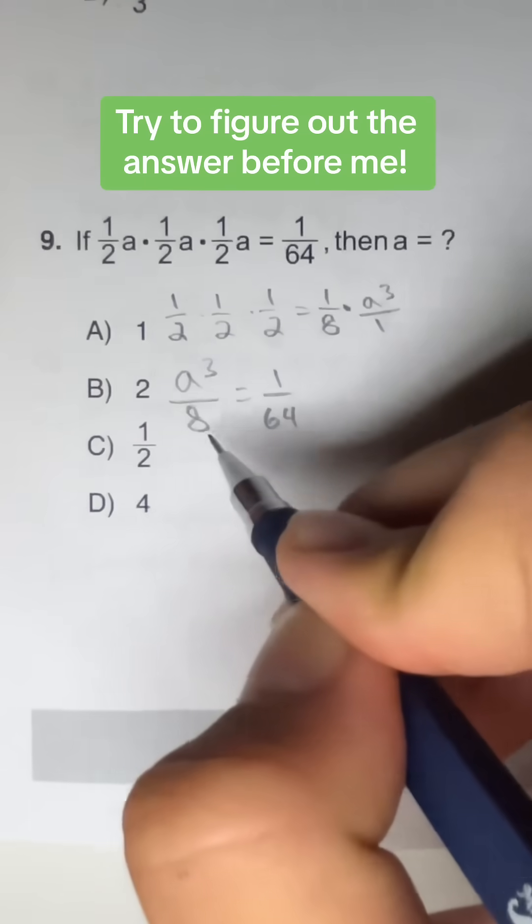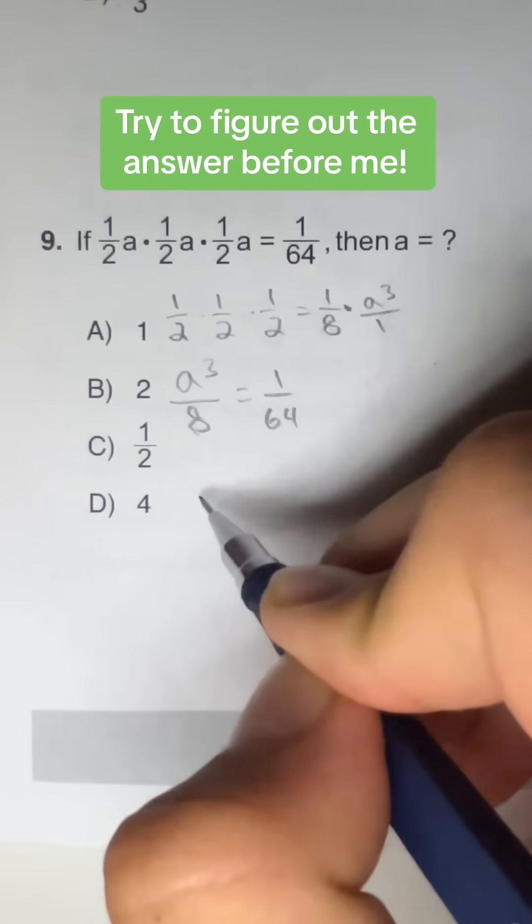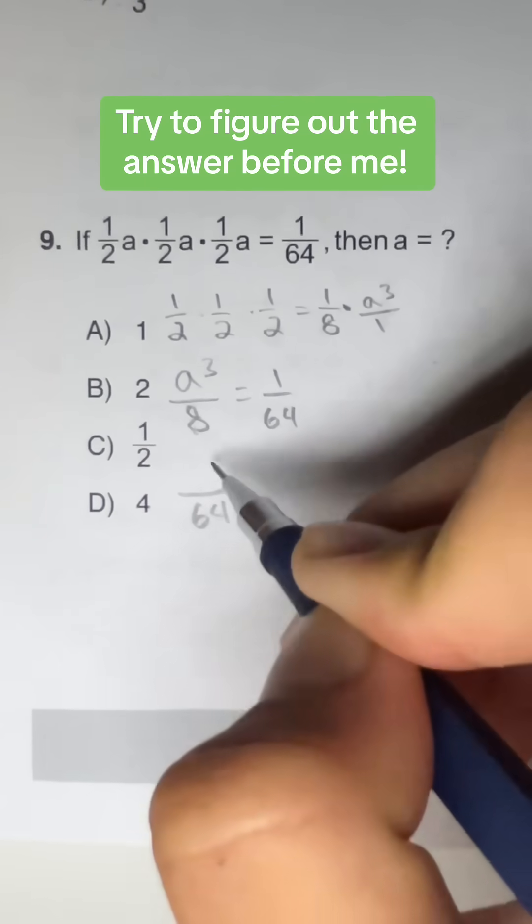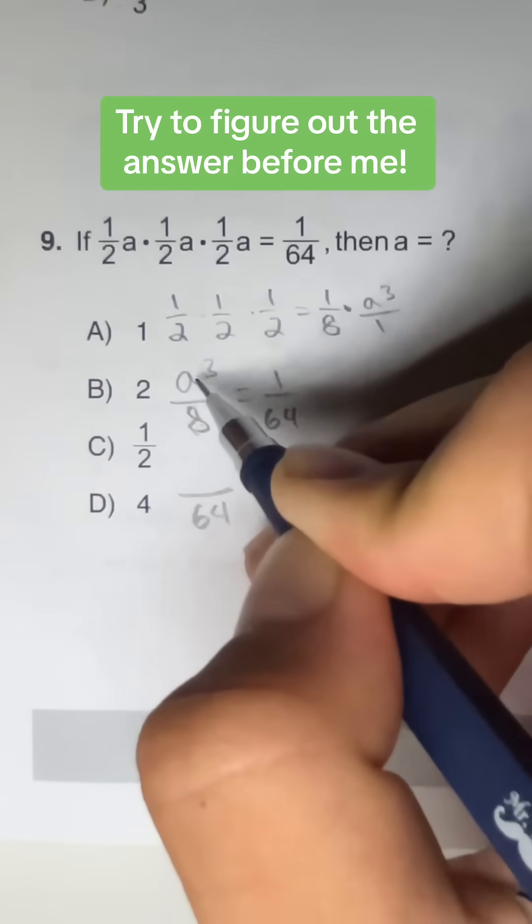So to go from 8 to 64, we got to multiply this side by 8, which would give us 64. But what we do to the bottom, we also need to do to the top.